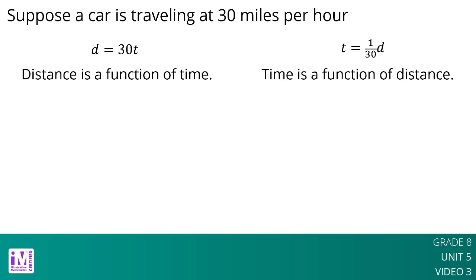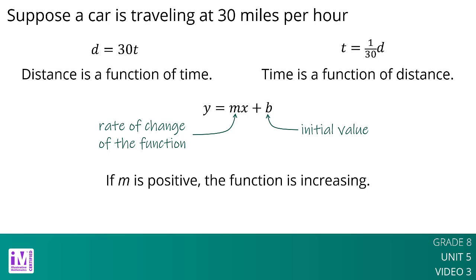More generally, if we represent a linear function with an equation like y equals mx plus b, then b is the initial value, which is 0 for proportional relationships, and m is the rate of change of the function. If m is positive, the function is increasing. If m is negative, the function is decreasing.